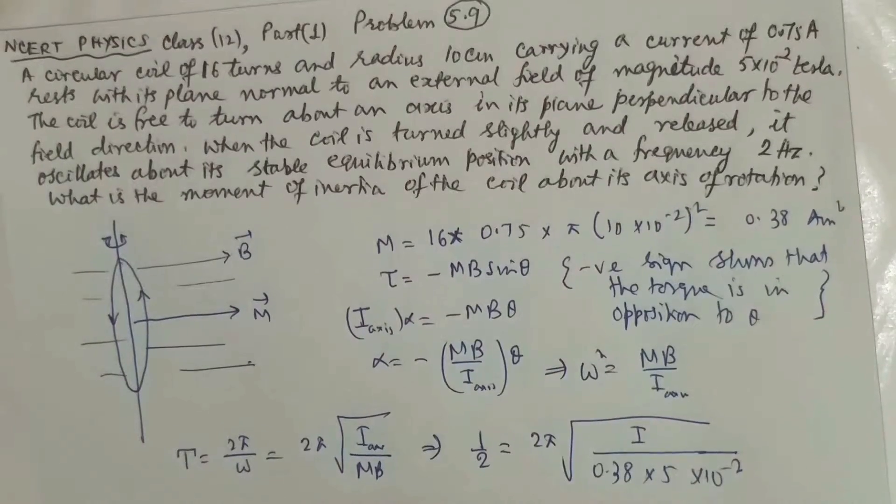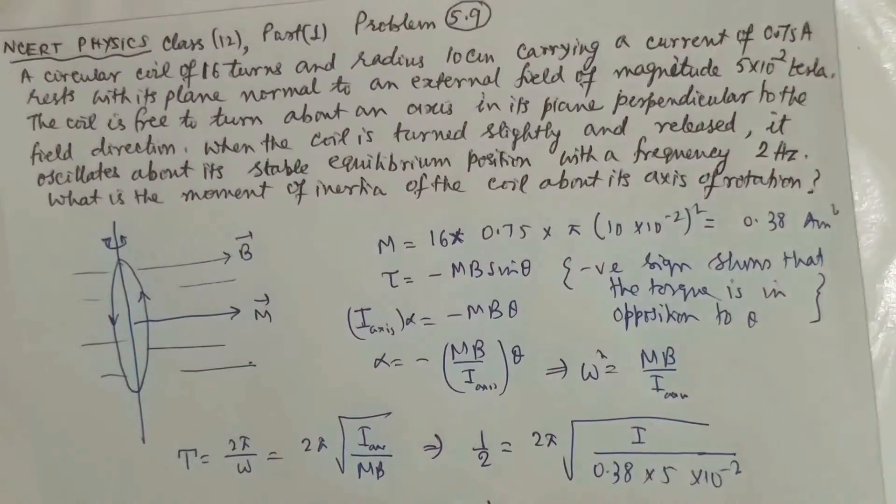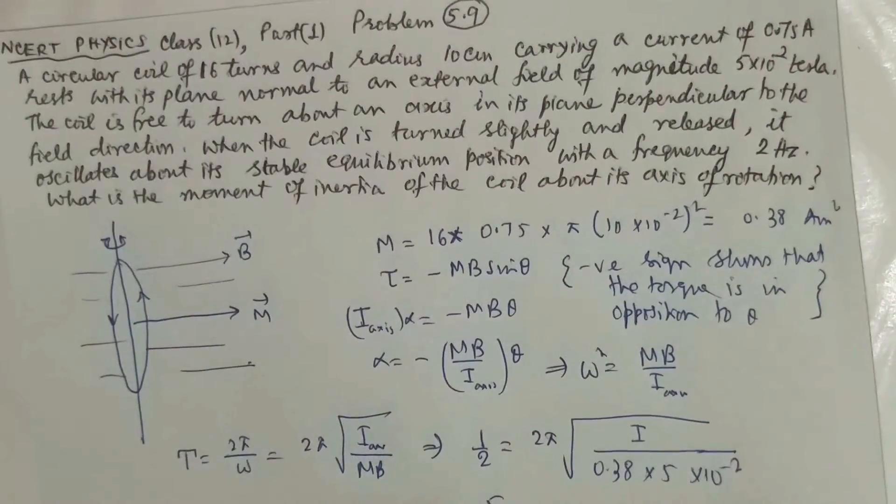If you solve, finally you get I is equal to 12 into 10 to the power minus 5 kg meter square.